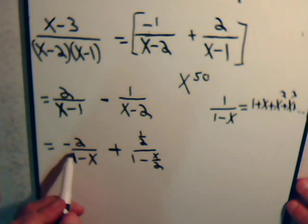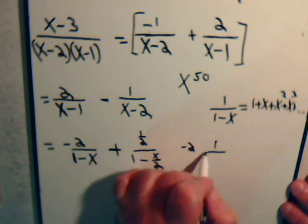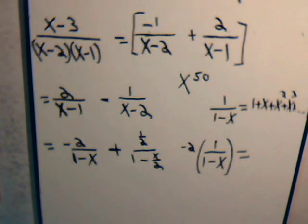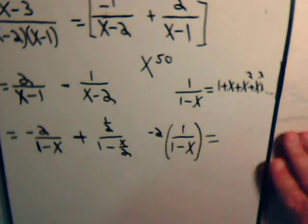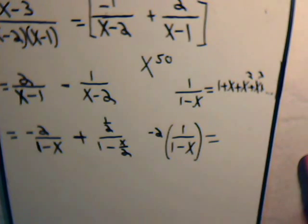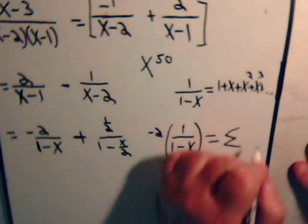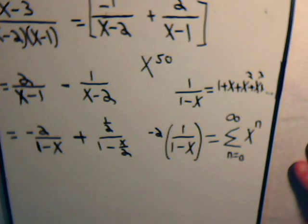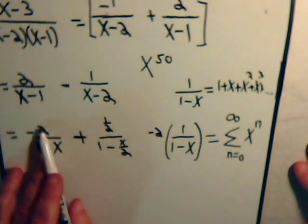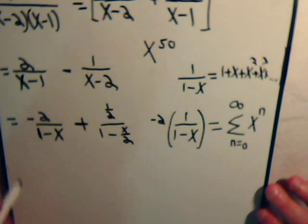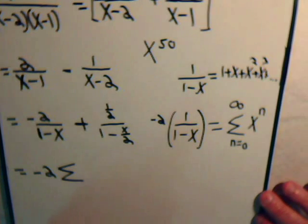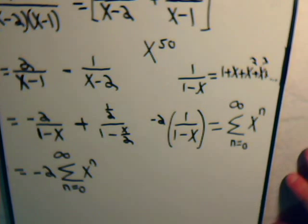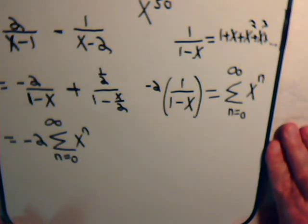Now this is minus 2 times 1 over 1 minus x. And this, as we know from working with our previous videos, if we can get this into a better focus, this is equal to this infinite series here, which we can express just like this: x to the n summed up from n equals 0 to infinity. That's what this is. So this term right here, this gives us, this is equal to minus 2 times x to the n summed from n equals 0 to infinity.